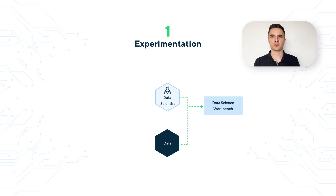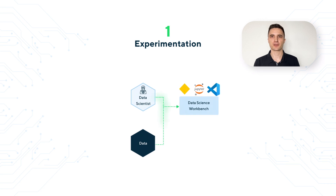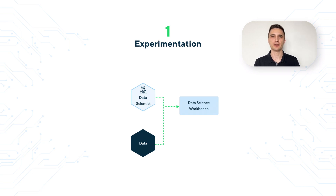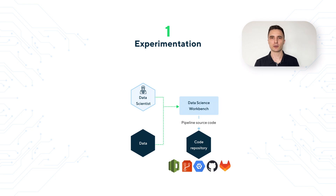We provide customized Jupyter Notebook instances with a rich feature set, such as an integrated VS Code environment and a local MLflow instance to track the initial experiments reliably. Data scientists will also have access to high-performance machines and production datasets, giving them the flexibility they need to build a reliable and reproducible ML pipeline. The pipeline is then committed to a source control repository, either the one you already have or the one we'll provision for you. This is where the manual work stops, as the rest will be automated by our platform.